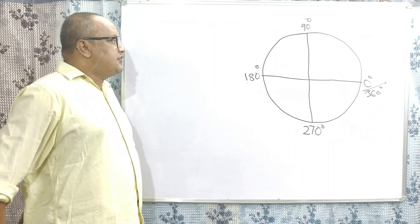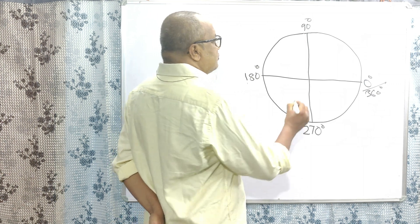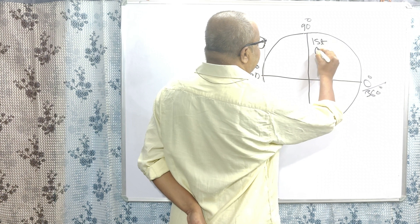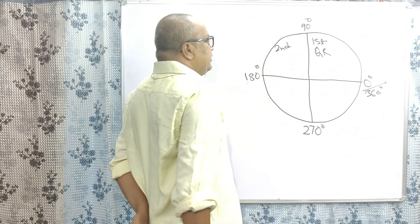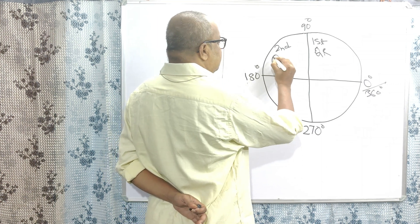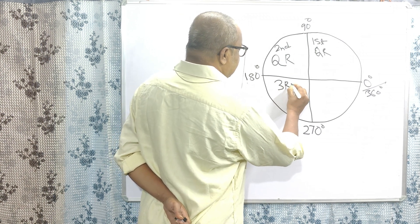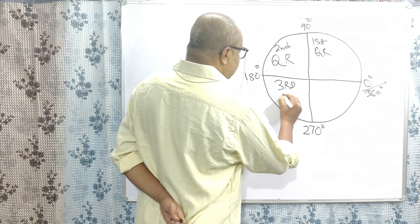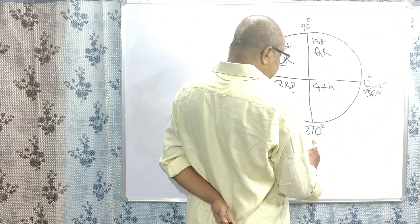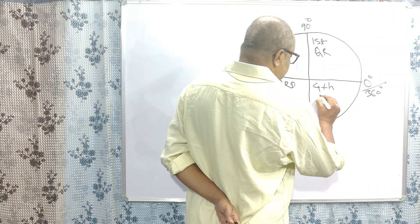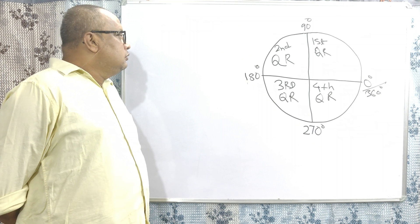This first part — the first 90 degrees — is called the first quarter. The second 90 degrees, that means 90 degrees to 180 degrees, is called the second quarter. The third part, from 180 to 270, is called the third quarter. And from 270 to 360 degrees is called the fourth quarter. So this circle is divided into four parts.